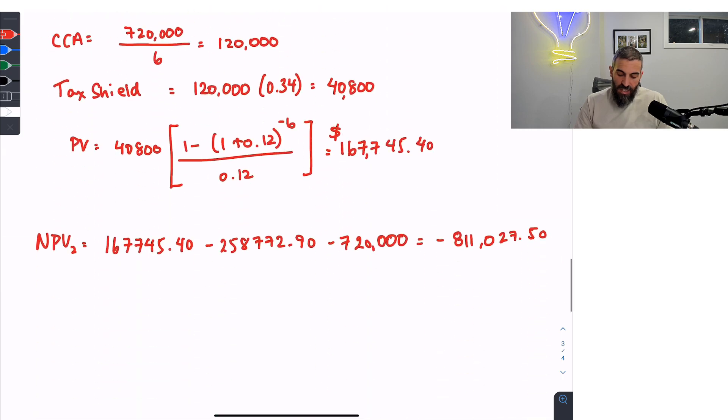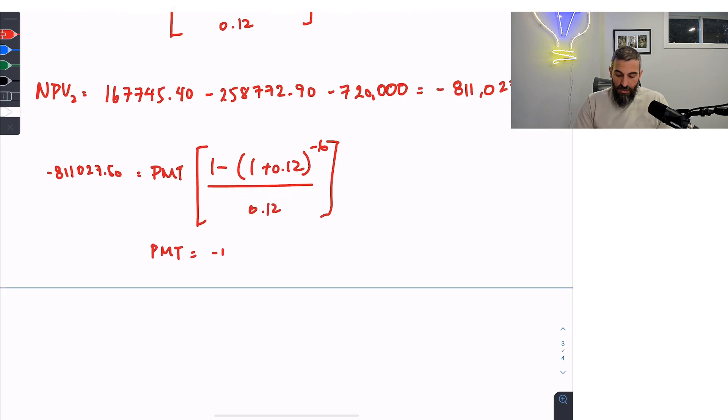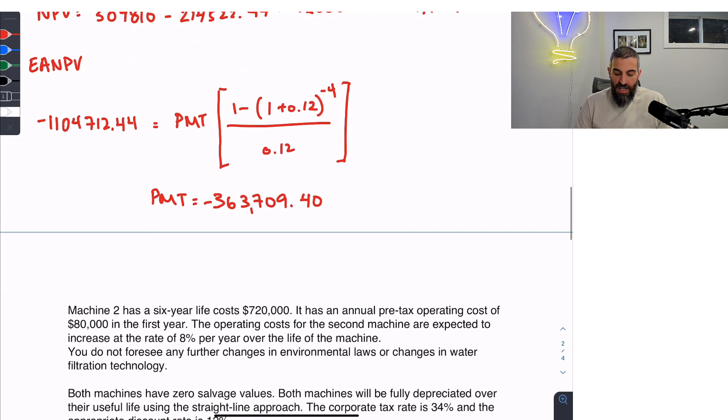If we repeat that now with the second machine, I'll take the net present value and solve for the payment. This time I get a net present value of negative $197,260.270. Confirming that machine two is actually better because it has a higher equivalent annual net present value. Negative $197 is greater than negative $363.